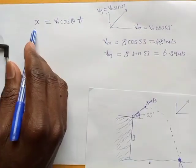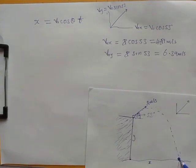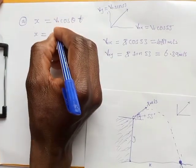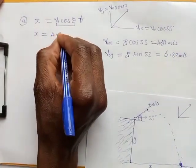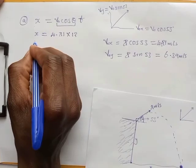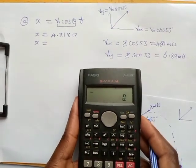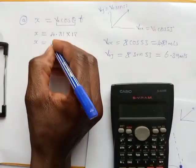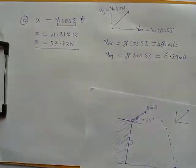For question (a), the distance from the base of the bridge to where the rock lands: x = v_initial_x × t = 4.81 × 12 = 57.72 meters. This is the first answer.